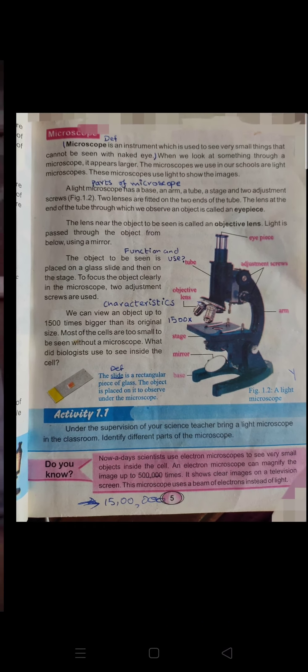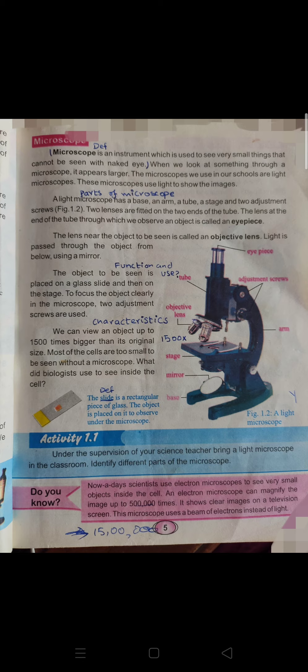Nowadays, scientists use electron microscopes to see very small objects inside the cell. Scientists have developed electron microscopes that use electrons — negatively charged particles that revolve in orbits. An electron microscope can magnify an image up to 500,000 times.